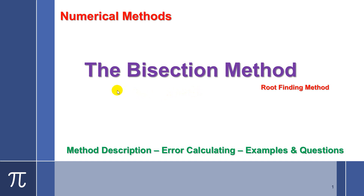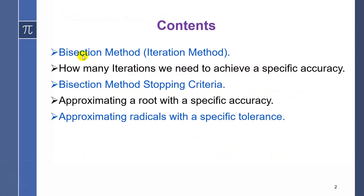In this video, I'm going to talk about the bisection method as a root finding method. I will discuss the method description, error calculation, and examples and some questions. I will talk about the bisection method as an iteration method, how many iterations we need to achieve specific accuracy, bisection method stopping criteria, approximating a root with a specific accuracy, and approximating radicals with a specific tolerance.